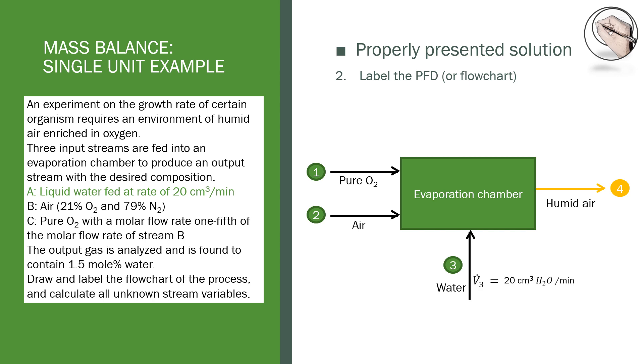We are given the volumetric flow rate of the water stream (stream 3) as 20 cubic centimeters per minute. We are also given the molar composition of air, so we will write the flow rate of stream 2 in terms of moles. The example states that the pure oxygen stream is a fraction of the air stream, so we can write out the relationship in terms of moles as well. Lastly we're told that the composition of the humid air (stream 4) is 1.5 mole percent, so we will use a molar flow rate for stream 4 as well.